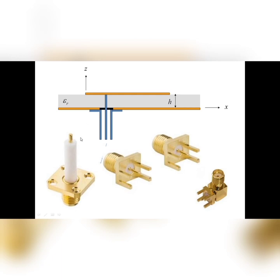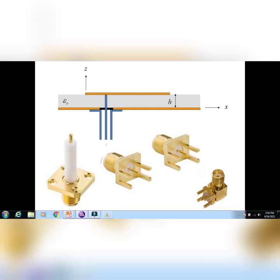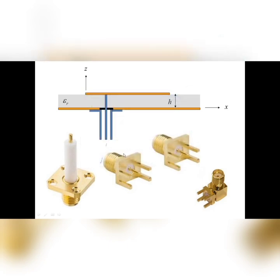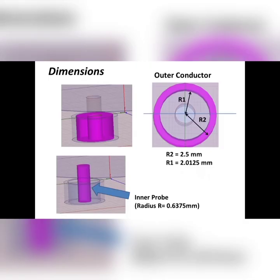If you go to the market to buy this, it is available like this. You can see the white part is the dielectric spacer, and there is an outer conductor below that, and a lengthy inner conductor. If you feed the coaxial probe feed by strip, you can go for this type of connector. If you want a vertical strip feed, you have to go for this one. These are all available in the market.